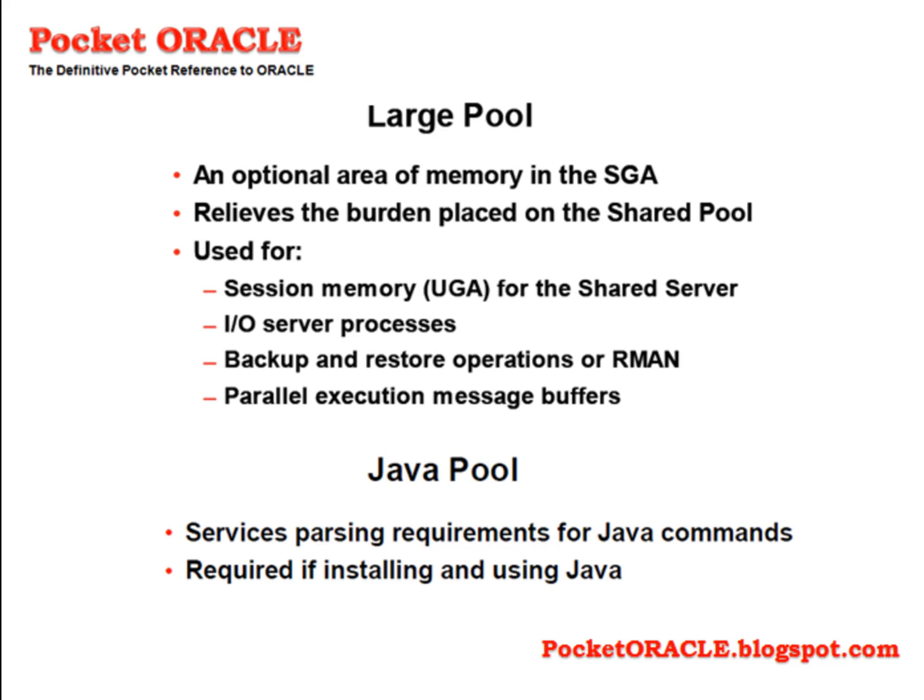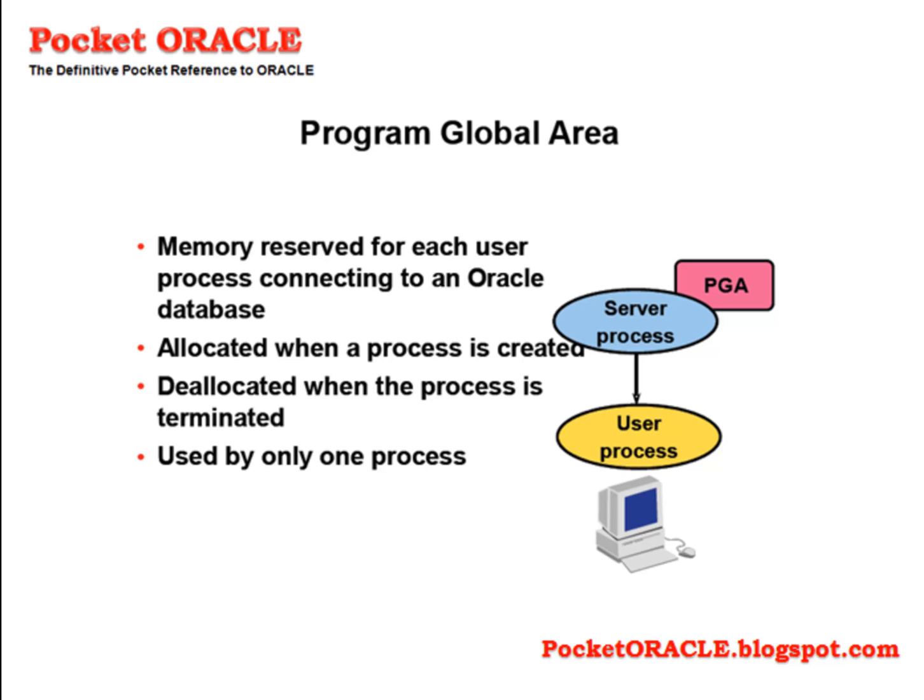However, a number of Oracle options are written in Java, so the Java pool is considered standard nowadays. The sizing of SGA memory structures is critical for performance. In general, they should be large enough but not too large. In addition to wasted memory, performance can degrade if too much memory is assigned to the SGA components. The program global area is the memory reserved for each user process connecting to an Oracle database. It's allocated when a process is created, deallocated when the process is terminated, and is always used by only one process.